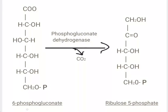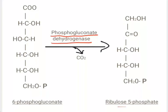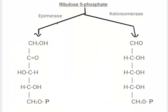Next, 6 molecules of 6-phosphogluconate, in the presence of 6-phosphogluconate dehydrogenase, get converted into ribulose-5-phosphate. The formation of ribulose-5-phosphate indicates the end of the oxidative phase.